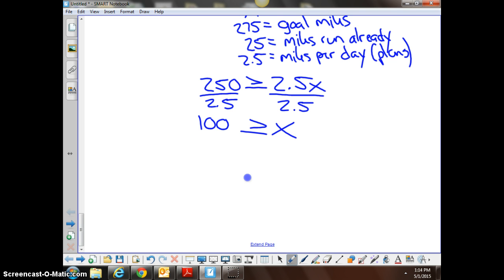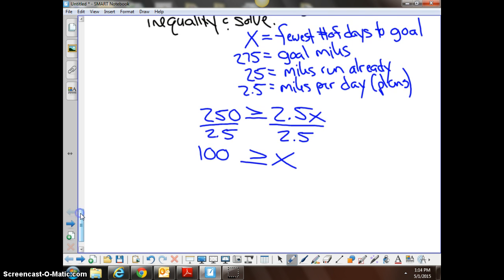So that's your final answer, right? Yes. The fewest number of days to the goal would be 100 equals x, or x is less than 100. So x is either going to be 100 or less. Could it be less if he's running 2.5 miles per day?